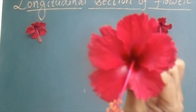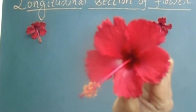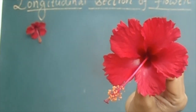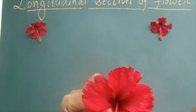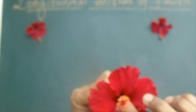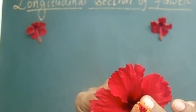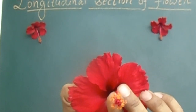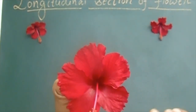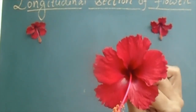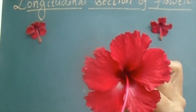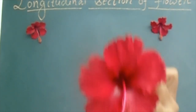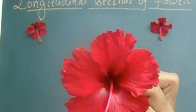Now in the flower also, can you tell me the reproductive parts of a flower? The reproductive parts of the flower are stamen and carpel, or pistil as we call it. Come, let's learn to draw the structure of this flower — that is hibiscus.